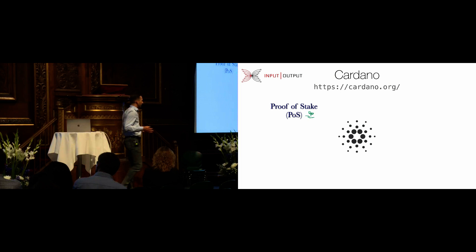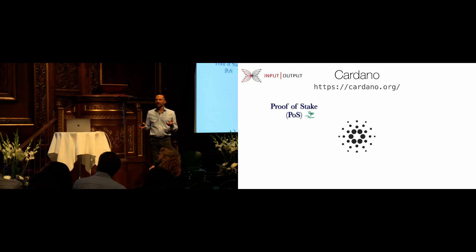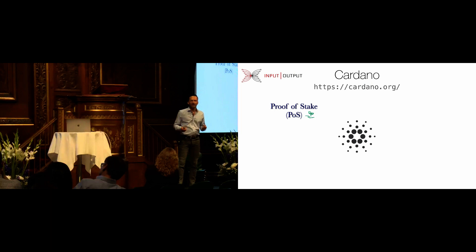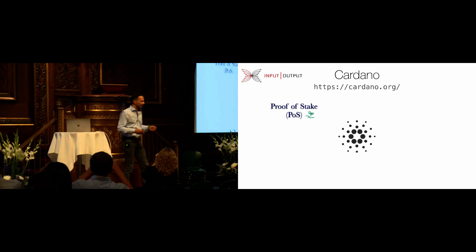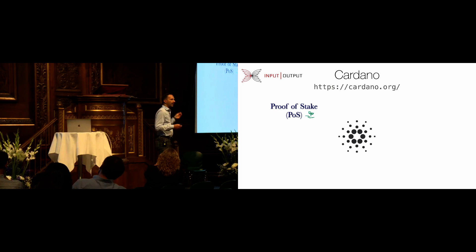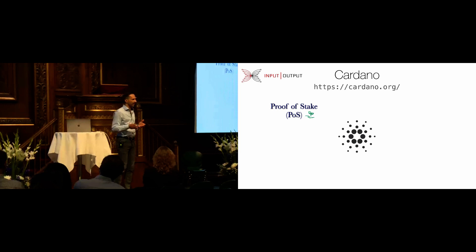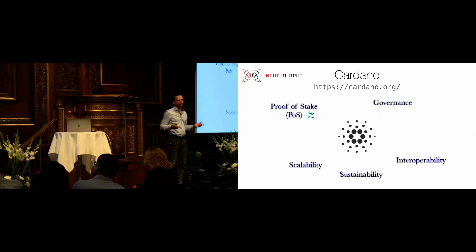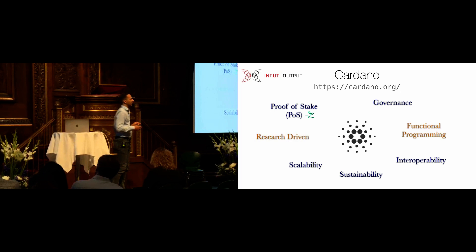Another topic which often comes up is how to achieve consensus. Cardano is firmly rooted in the opinion that we don't want to waste precious energy, especially in the current time where climate change is one of the biggest threats to humanity. We don't want to waste energy on solving pointless cryptographic puzzles just to agree on which block comes next. In proof-of-stake systems, a Cardano node can run on a Raspberry Pi device, which is obviously far less energy than a mining farm.